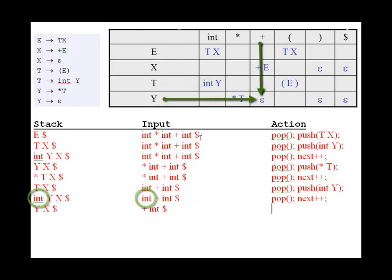Next, we have Y and a plus. Notice that's our first epsilon, so we pop but there's no push because epsilon is null.